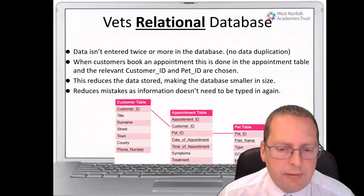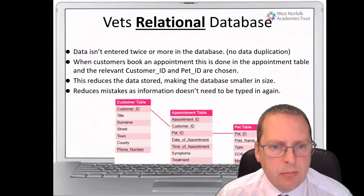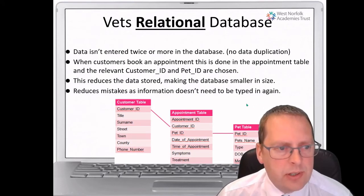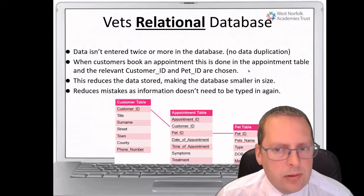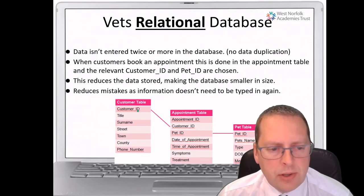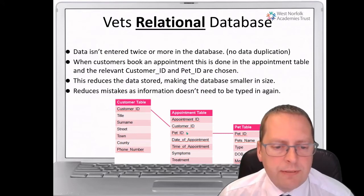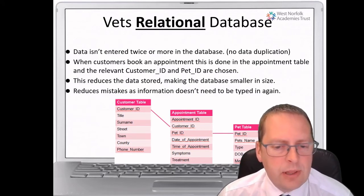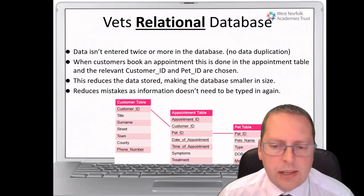With a relational database, we're not entering data more than once — there's no data duplication. If a customer books an appointment, the booking is made in the appointment table, and it automatically finds information about the customer and the pet from the other tables. As long as we know the customer ID and the pet ID, we can find the rest of the information — so it's much quicker to input data with less chance of making mistakes.